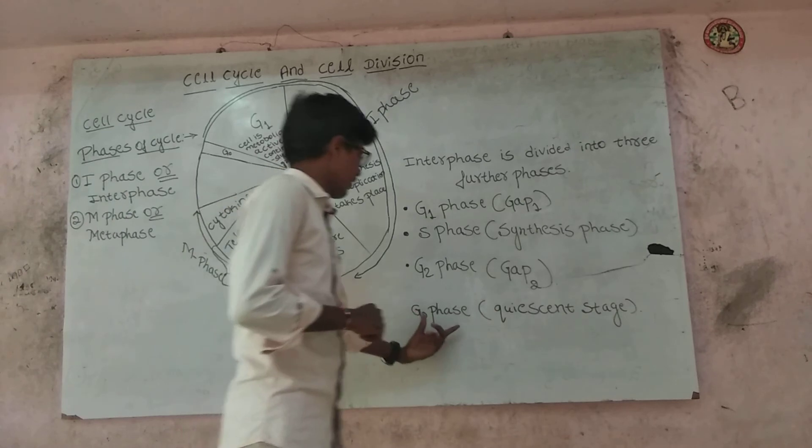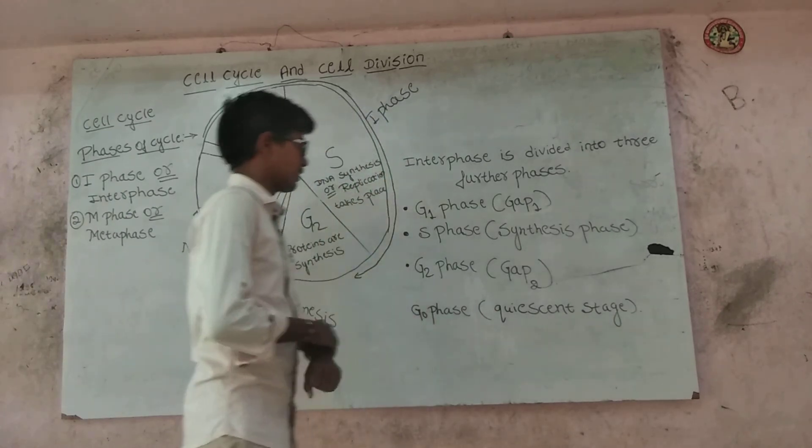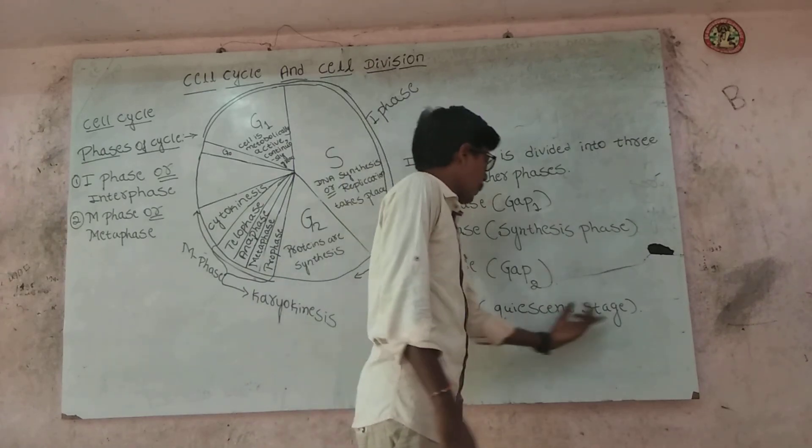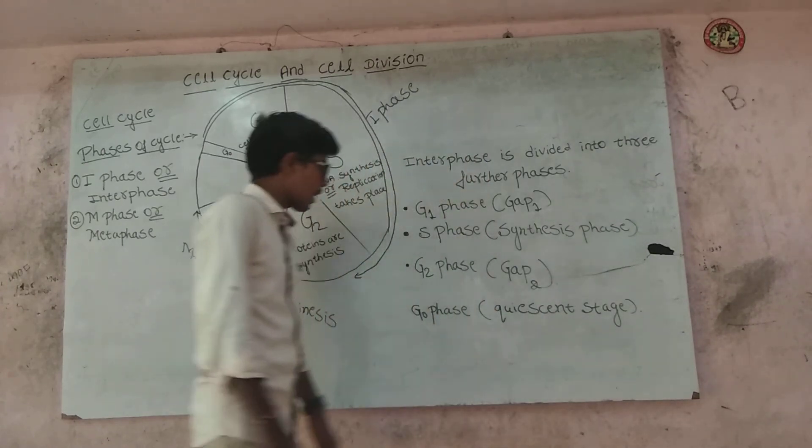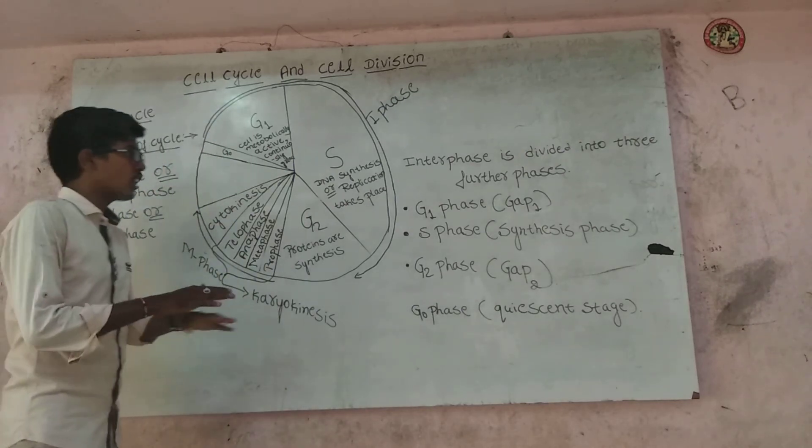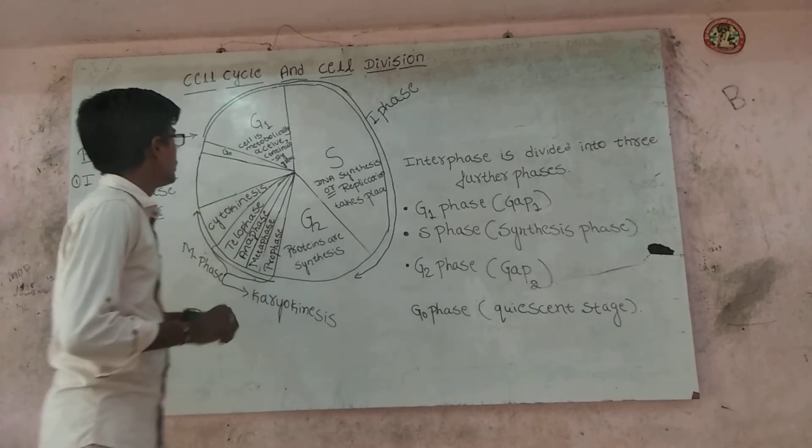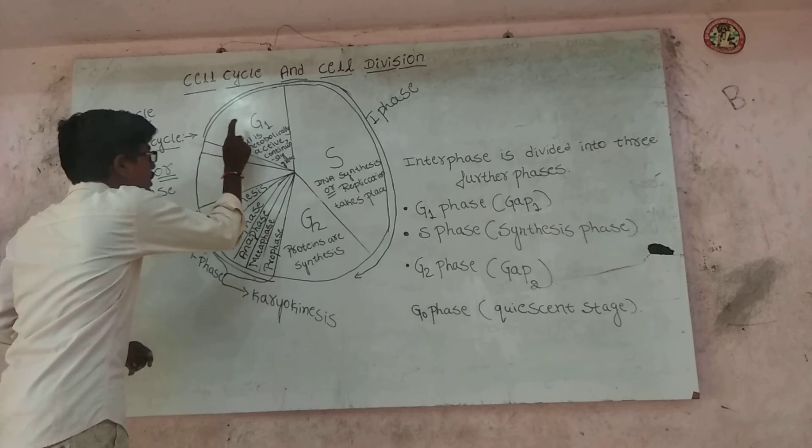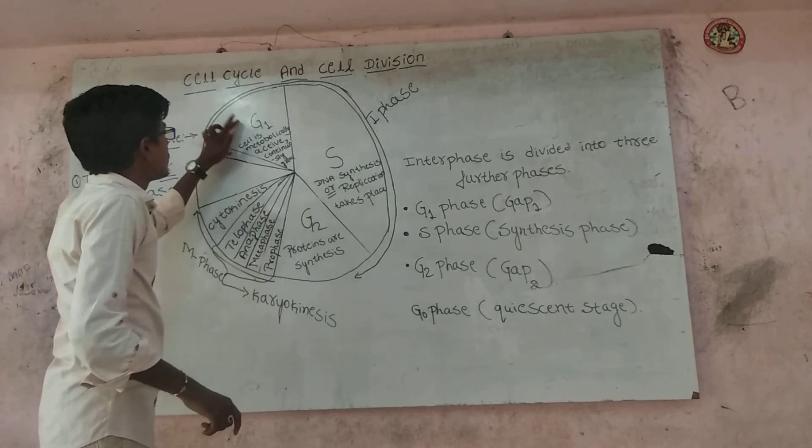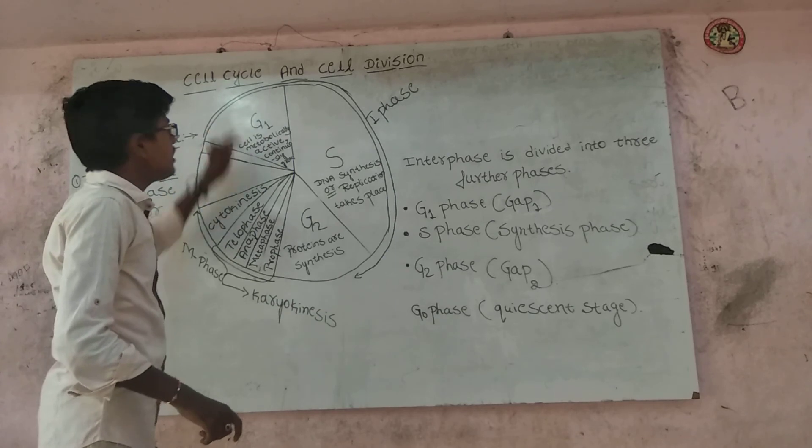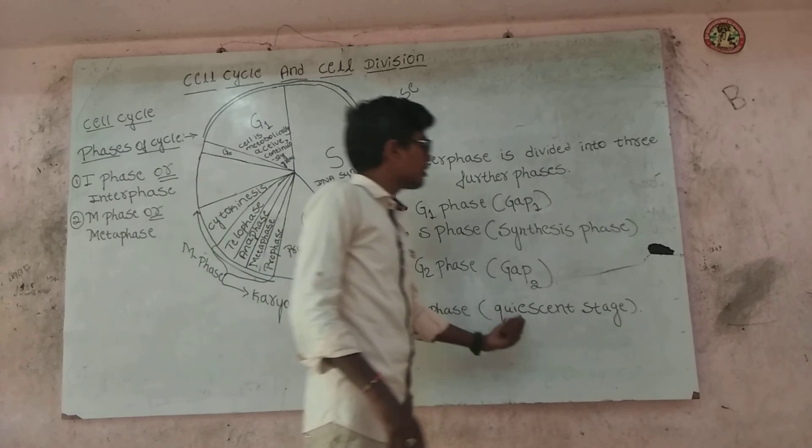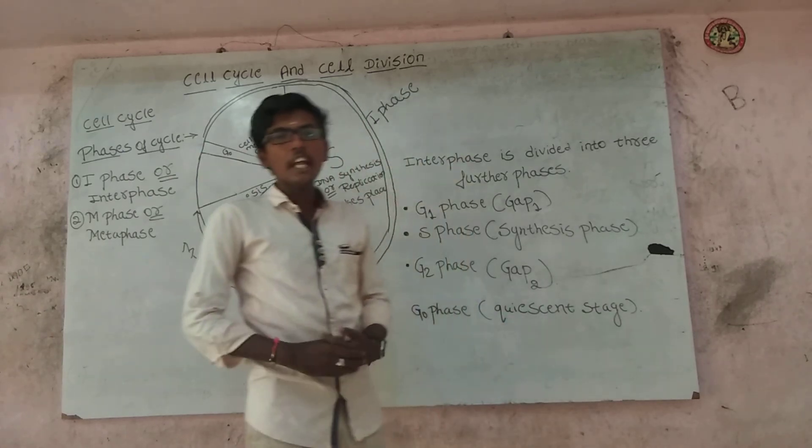The last one is G0 phase, also known as quiescent phase. During this phase, the cell does not undergo division and enters an inactive stage called G0 phase or quiescent stage. Thank you.